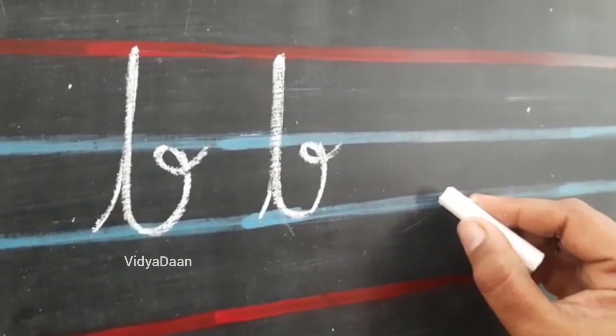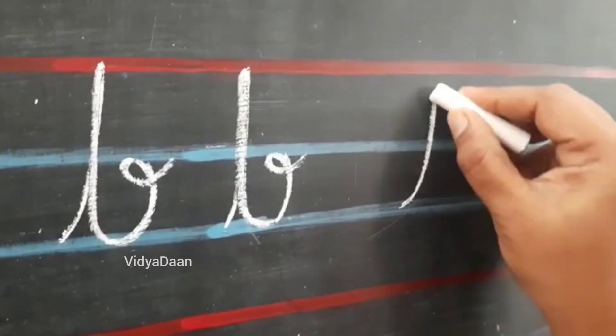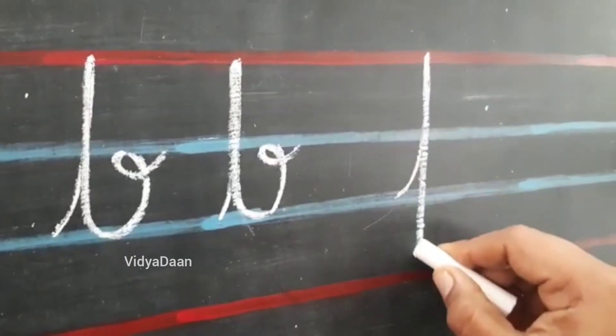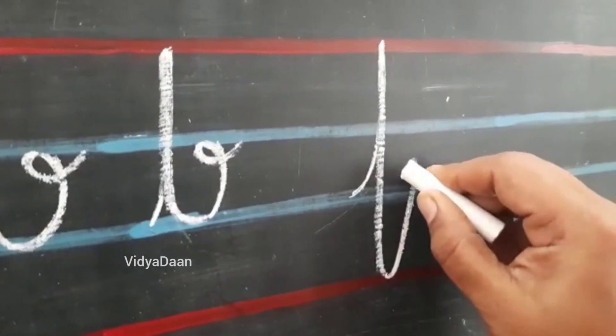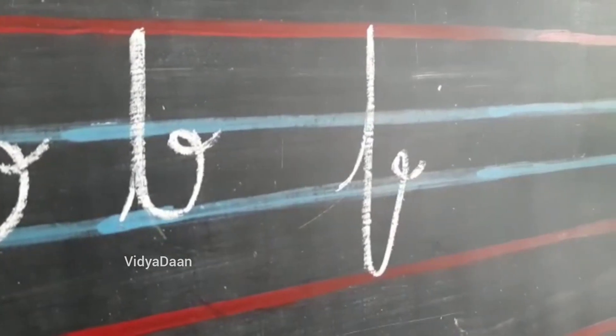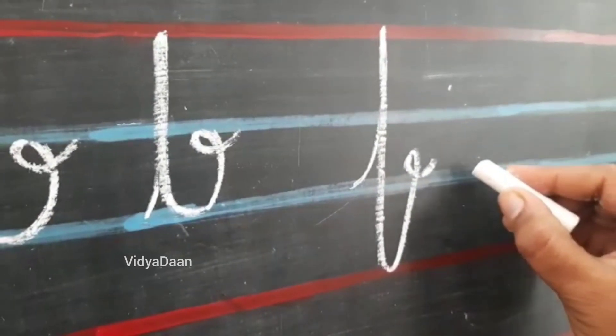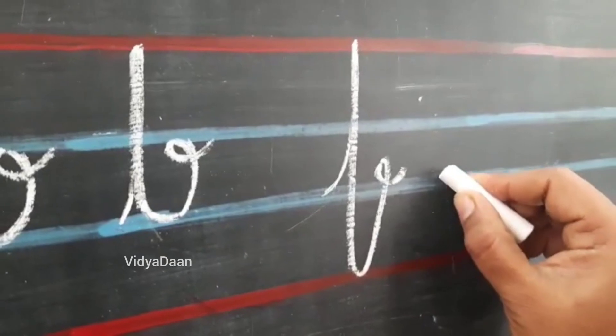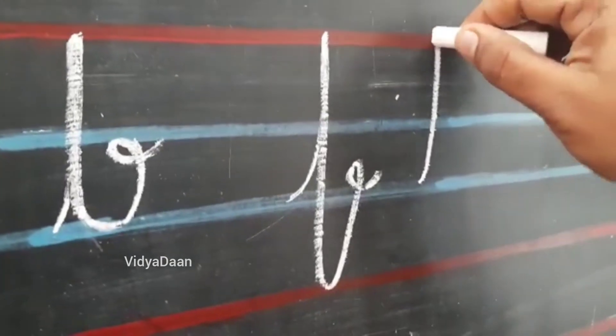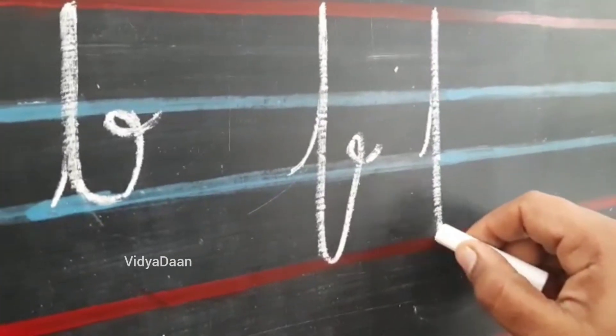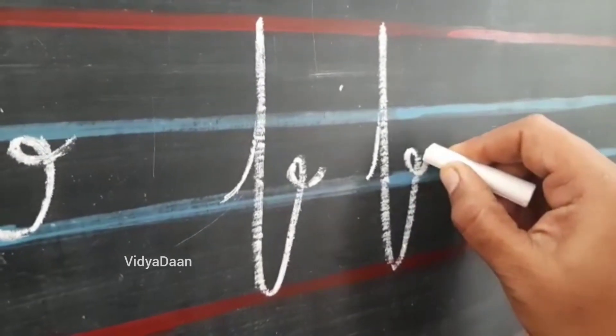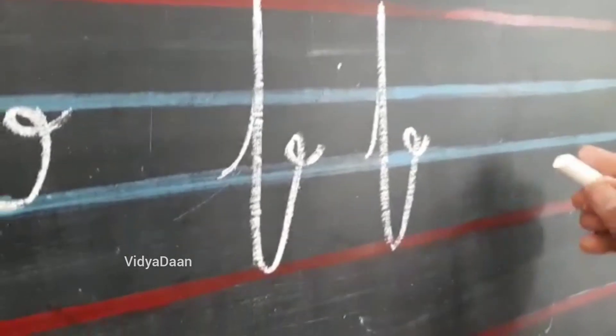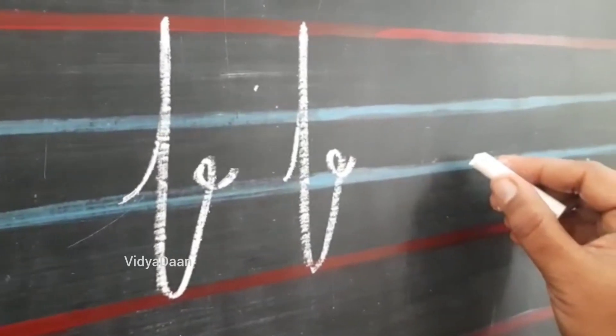And the next letter is F. This time, this F will come to the downline and again we have to come back to the baseline. See again, I am starting from the baseline. I am going to touch the upline, but coming back to the downline and you have to turn like this in the baseline. This is F and the next letter is I, children.